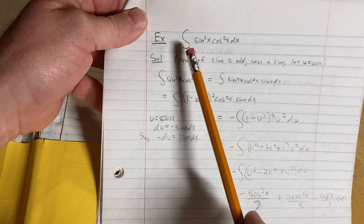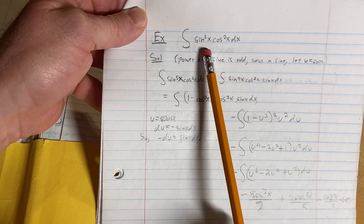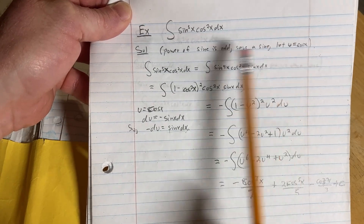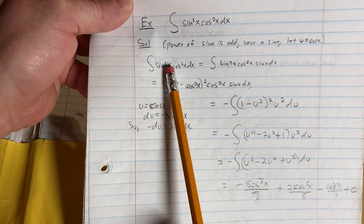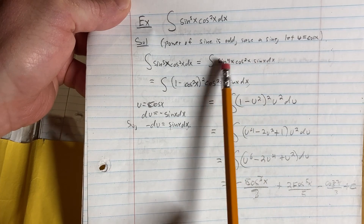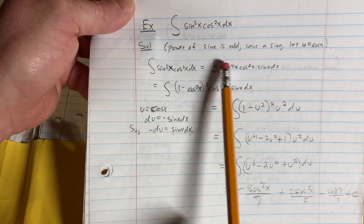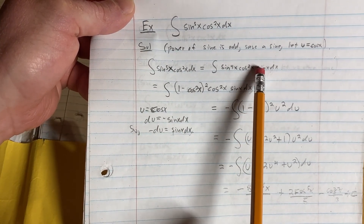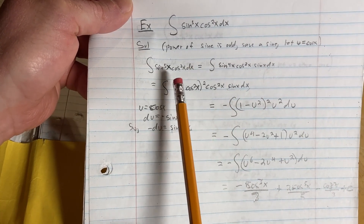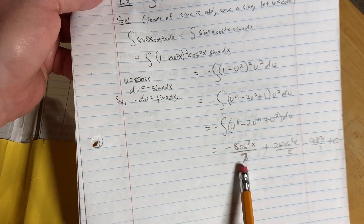Here's another example. This time I purposely made sine the one being raised to the odd power: sine of x to the fifth power times cosine of x squared. Power of sine is odd, so save a sine and let u be cosine. Sine to the fifth becomes sine to the fourth times sine. Because we saved a sine, u is cosine. Sine squared is 1 minus cosine squared, so we apply that, make the substitution, and don't forget the negative. Then just finish the problem.